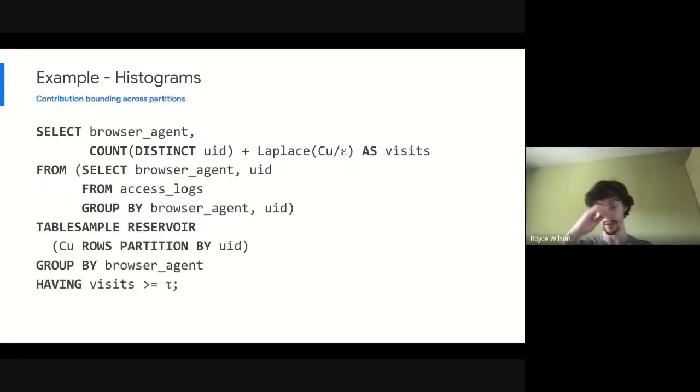We address this in the final step here by sampling the number of rows per user, or rather the histogram bins that each user can contribute to. So we introduce this final parameter C sub U. C sub U dictates how many histogram bins each user can contribute to. And now we scale up the amount of noise that we're adding based on C sub U. And with these three modifications to our query, we now have this browser agent access log query that satisfies our full definition of epsilon delta differential privacy.